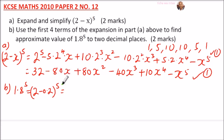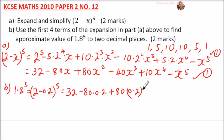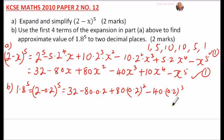Substituting x = 0.2 into the first four terms: 32 - 80(0.2) + 80(0.2)² - 40(0.2)³. Those are the four terms: term 1, term 2, term 3, and term 4.